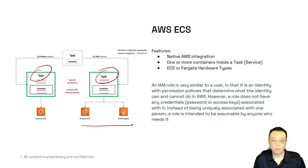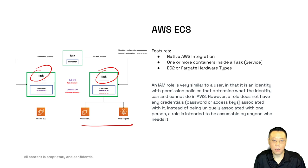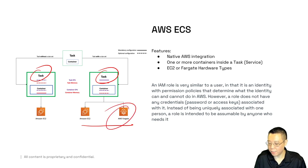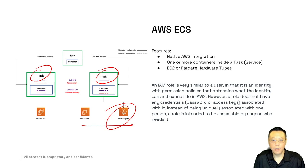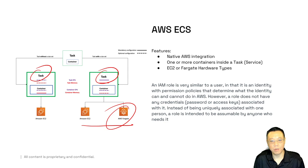AWS Fargate is a way of saying: I don't want to manage the EC2 instances — you manage it. I tell you what sizing you need, and you determine based on strategies and task definition requirements how many hosts I need and where to put different tasks. That's all it really means. AWS Fargate is the highest level of abstraction when using ECS. Alternatively, you can use EKS with Fargate so you don't have to manage the back end — a completely managed system — without being locked into ECS.